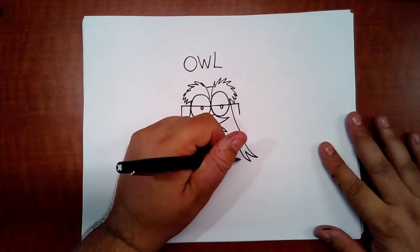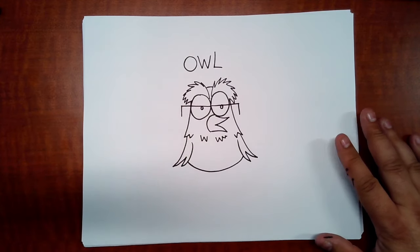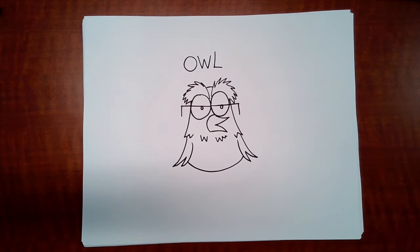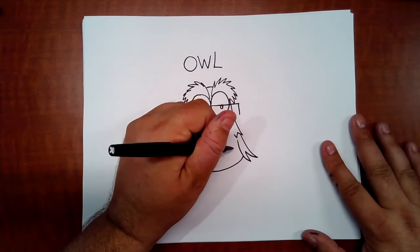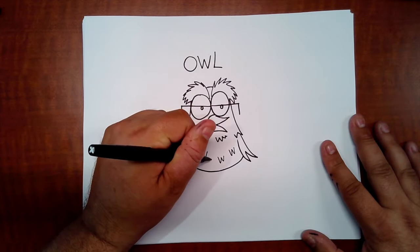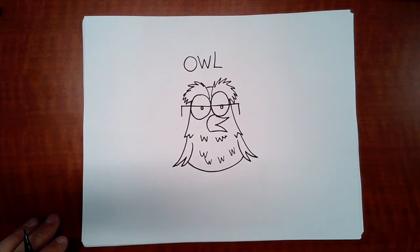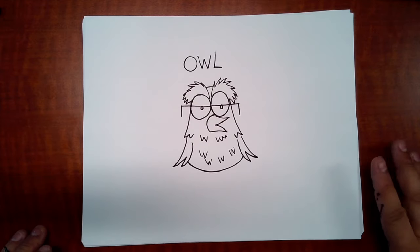Connect the left wing to the right wing with a slightly curved line, and then add some more texture. Texture is how something would feel if you were to touch it. Obviously if you were to feel this it feels like paper, but we want it to look like feathers, so that's the texture we're creating visually by adding the W's.